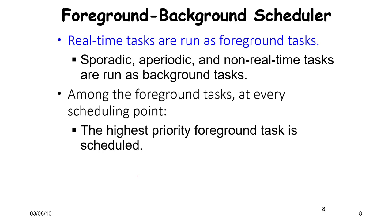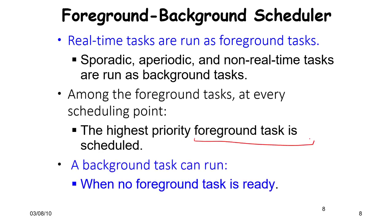In the foreground-background scheduler, real-time tasks are the foreground tasks, and all other sporadic, aperiodic, and non-real-time tasks are run as background tasks. The moment a foreground task comes, we simply preempt the background task and run the foreground task. Among the foreground tasks there is a priority order, so at every scheduling point the highest priority foreground task is chosen. Background tasks can run only when no foreground task is ready.